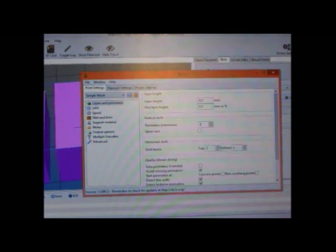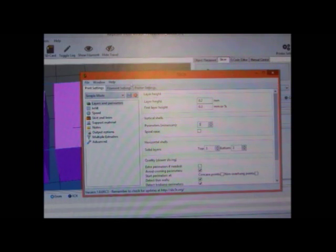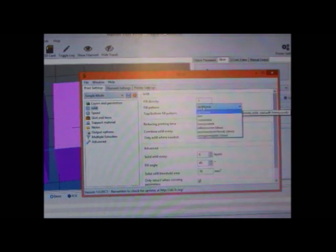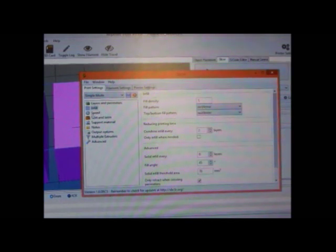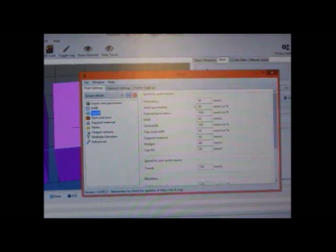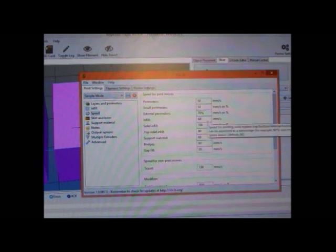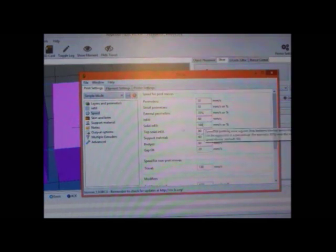And infill make it 1 and rectilinear. In speed, change it to 50. Small perimeters 50mm per second, external perimeters at 70%, infill at 60mm per second, solid infill at 100mm per second.